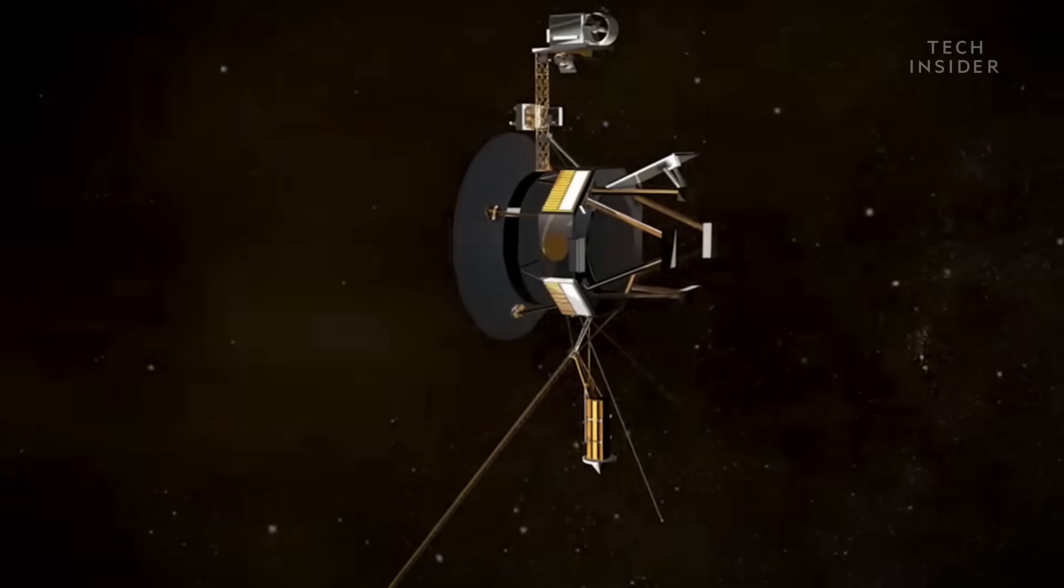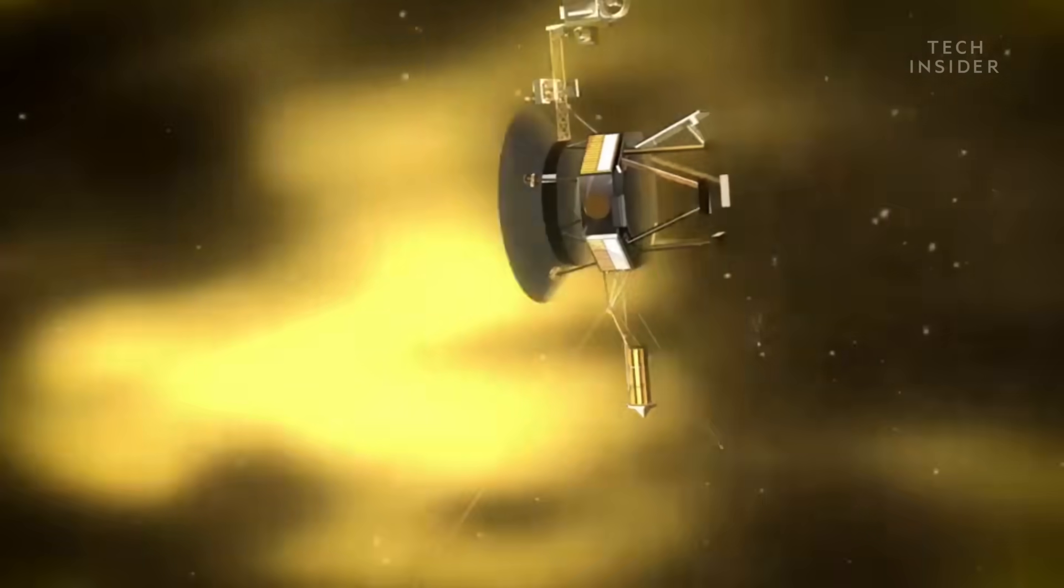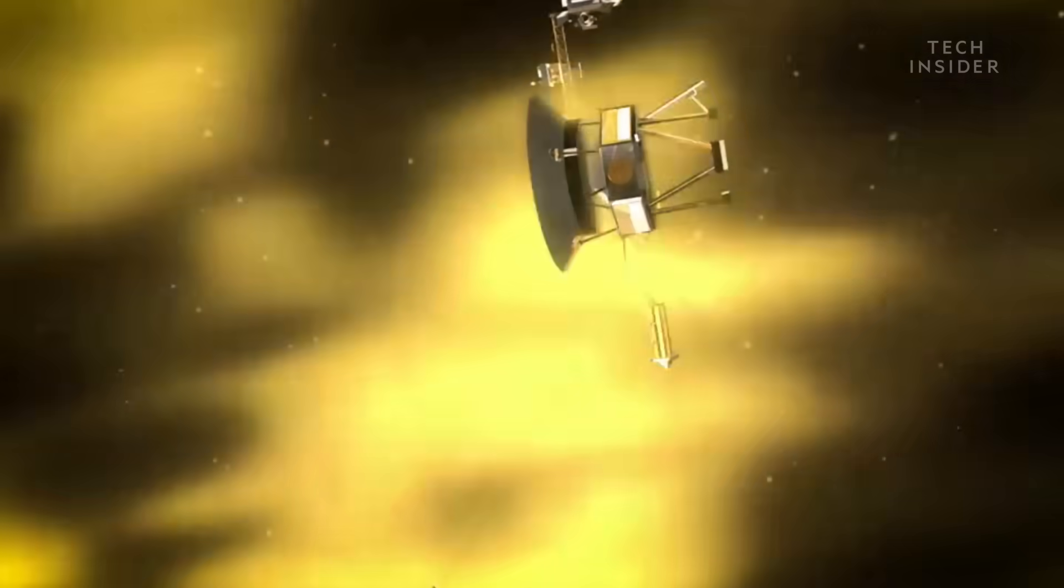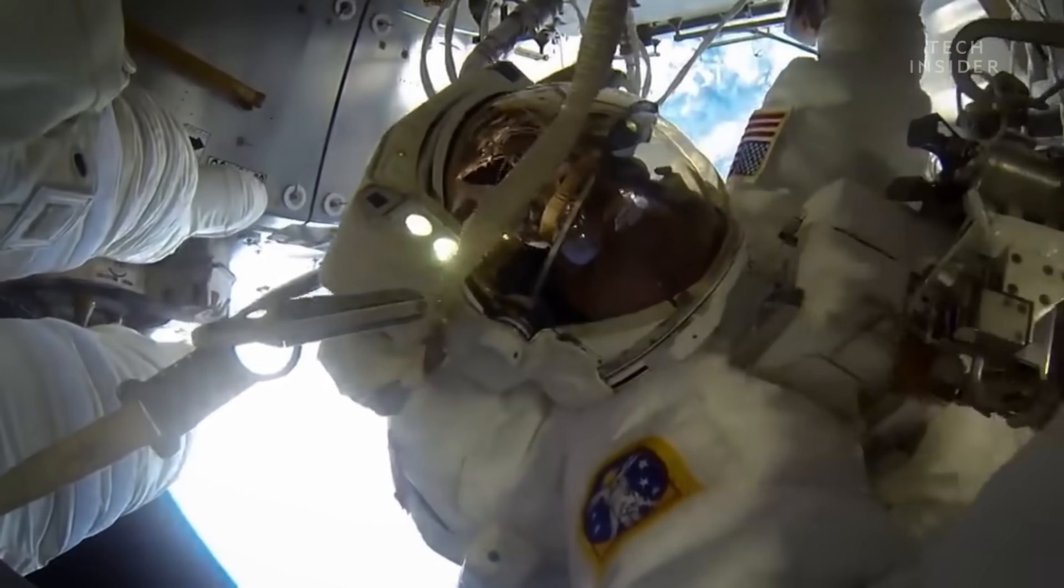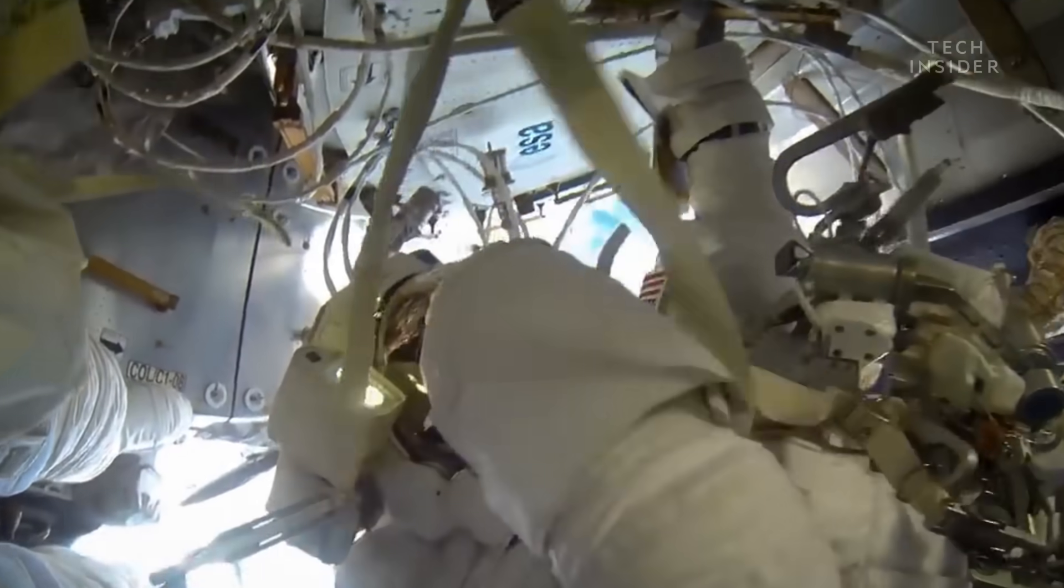Satellites and crewed space missions will need extra shielding that we'll have to provide ourselves. Without it, intense cosmic and solar radiation will fry circuit boards and increase the risk of cancer in astronauts.